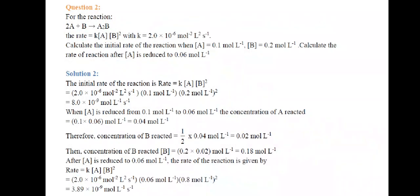Second question: For the reaction 2A + B → A2B, the rate is given by rate = K[A][B]², with K = 2.0 × 10⁻⁶ mol⁻²·L²·s⁻¹. Calculate the initial rate of reaction when [A] = 0.1 mol·L⁻¹ and [B] = 0.2 mol·L⁻¹. So initial rate = 2.0 × 10⁻⁶ × 0.1 × (0.2)² = 8.0 × 10⁻⁹ mol·L⁻¹·s⁻¹.